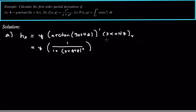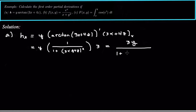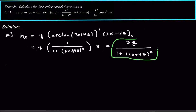The derivative of arctangent is 1 over 1 plus whatever's inside arctan squared — in this case (3x + 4z) squared. Multiplied by the derivative of 3x + 4z with respect to x, which is 3. So we get 3y over 1 plus (3x + 4z) squared. It's not necessary to expand the denominator, so we leave it as is.